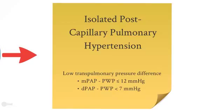In this case, there is a low transpulmonary pressure difference, either measured by a difference between the mean pulmonary artery pressure and the wedge pressure being less than 12 mmHg, or the diastolic pulmonary artery pressure minus the wedge pressure being less than 7 mmHg.